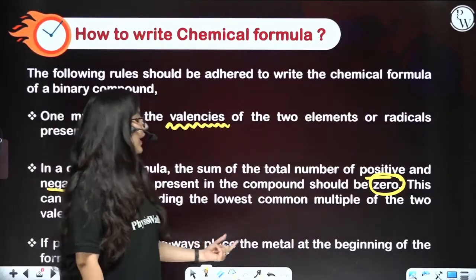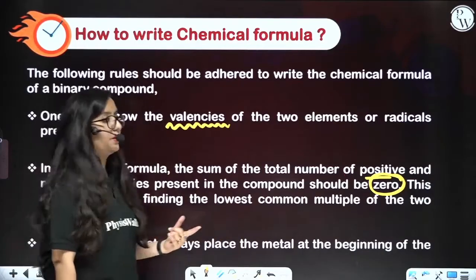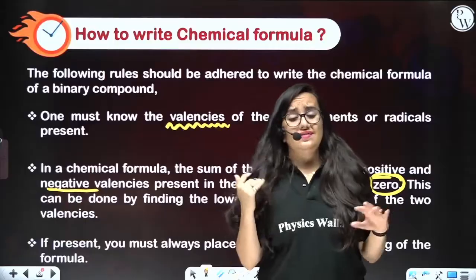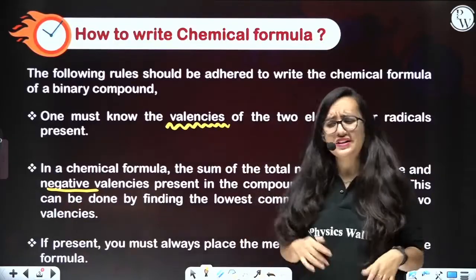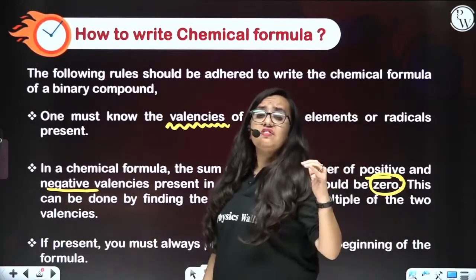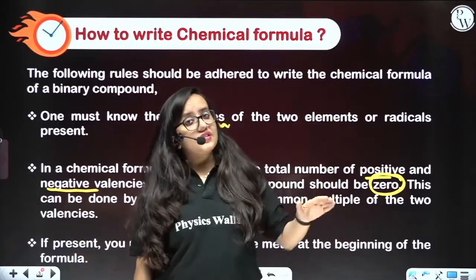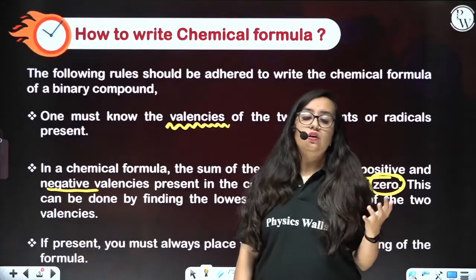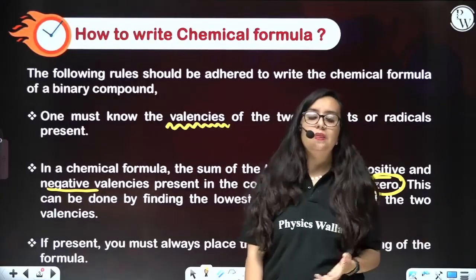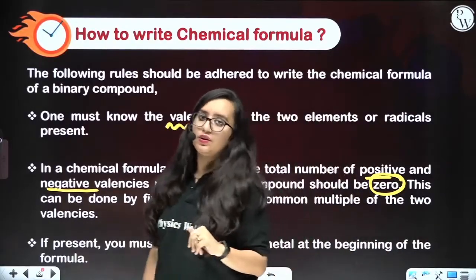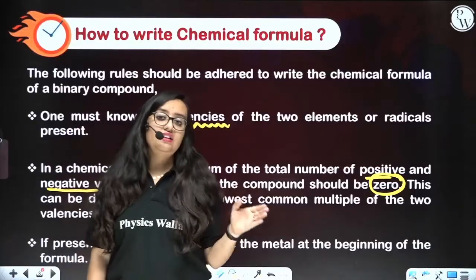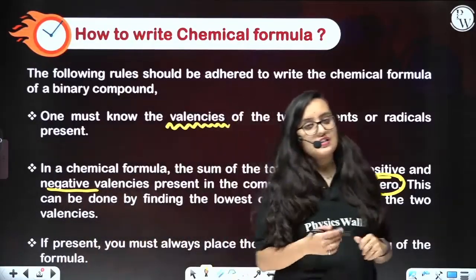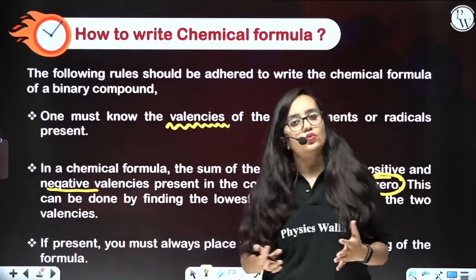If present, you must always place the metal at the beginning of the formula. It is a tradition — there is no scientific reason for it, but we always write the metal first and then the non-metal. For example, for aluminium chloride, we write AlCl₃, not Cl₃Al.